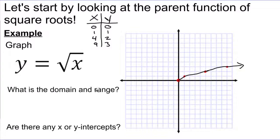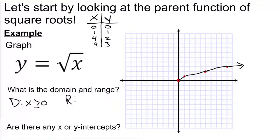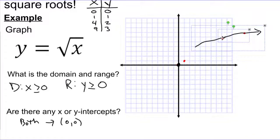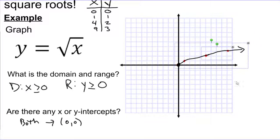Looking at this picture, the domain of the parent function — what we're allowed to substitute in — is x greater than or equal to 0. The range, looking at what values came out, is also y greater than or equal to 0. For intercepts, we do have both an x-intercept and a y-intercept at (0, 0). If we were to slide all these points up, it's possible to have neither x-intercepts nor y-intercepts when the graph moves off the axis.